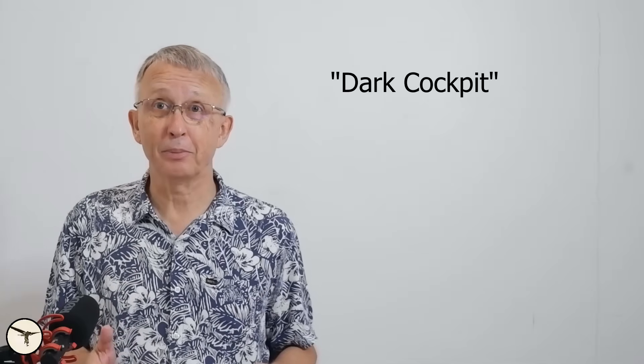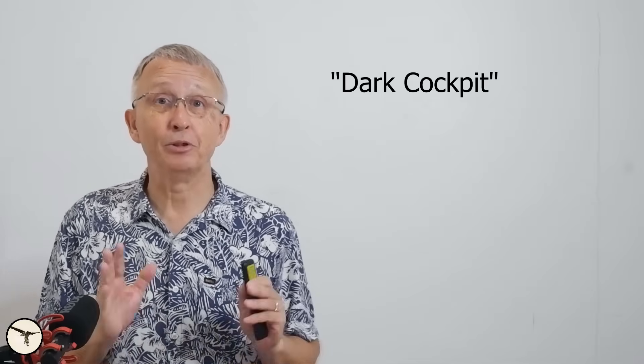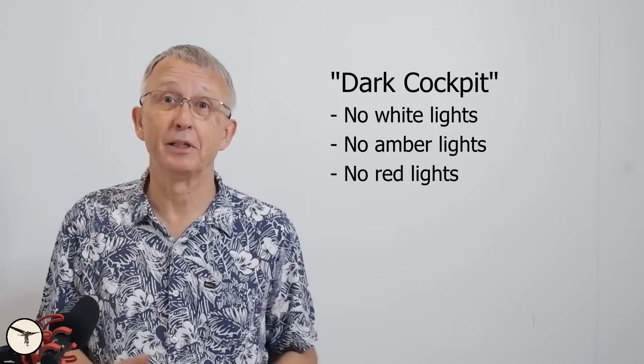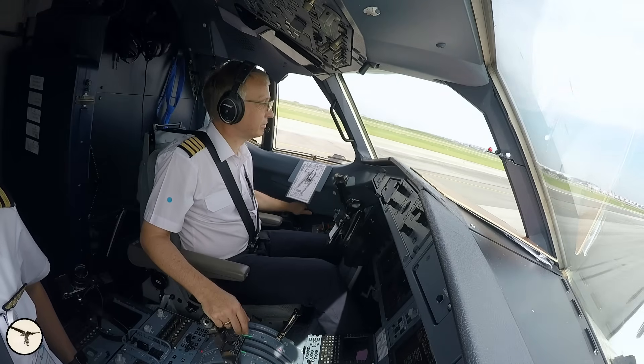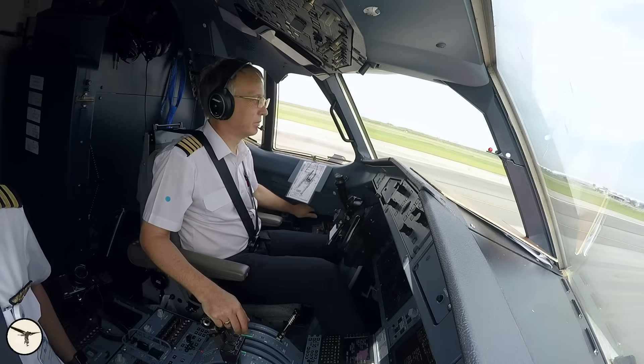The ATR aircraft follows a concept known as the dark cockpit. Not black, but dark. This means that during normal operations, you won't see any white, amber, or red lights in the cockpit. Before takeoff, I always do a quick scan of the panels. When there are no white, amber, or red lights, I know everything is good to go.